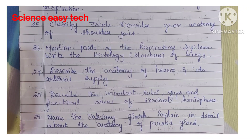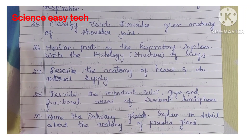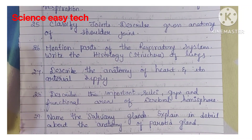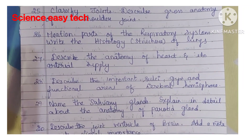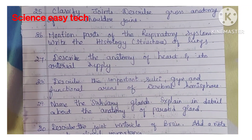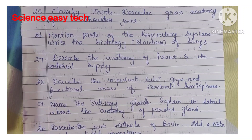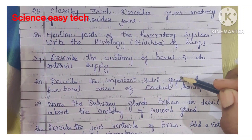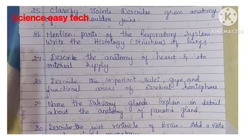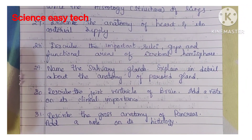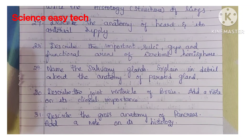Twenty-eighth question, describe the important sulci, gyrus or gyri and functional areas of cerebral hemisphere. Twenty-ninth question, name the salivary glands and explain in detail the anatomy of parotid gland. Thirtieth question, describe the ventricle of brain and add a note on its clinical importance.